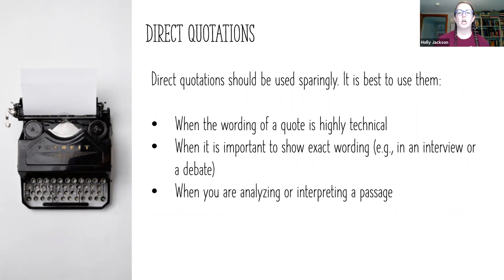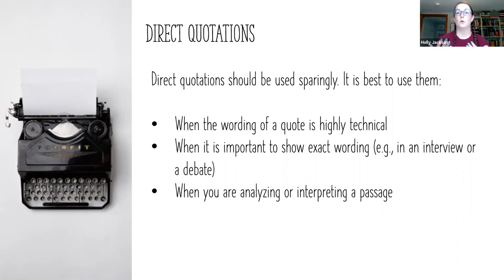Direct quotations are best used sparingly. They tend to be the easiest thing to use and we often use them a lot, but you really only want to use them if the wording is highly technical, if it's important to show the exact wording — like in an interview or a debate — or when you're analyzing or interpreting a passage. Some fields will actually limit the number of quotes you're allowed to use in a paper.